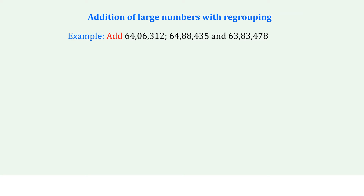Addition of large numbers with regrouping. Example: Add 64,06,312; 64,08,435; and 63,08,478.